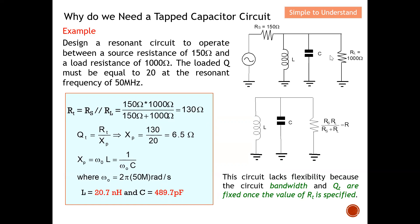With L and C found, I can design this parallel resonator with the source resistor of 150 ohms and load resistor of 1000 ohms. However, from this circuit you realize there is not much flexibility — the circuit Q is fixed once RT is specified. There is basically no way to change QT, hence we need a tapped capacitor circuit to gain one more degree of freedom.